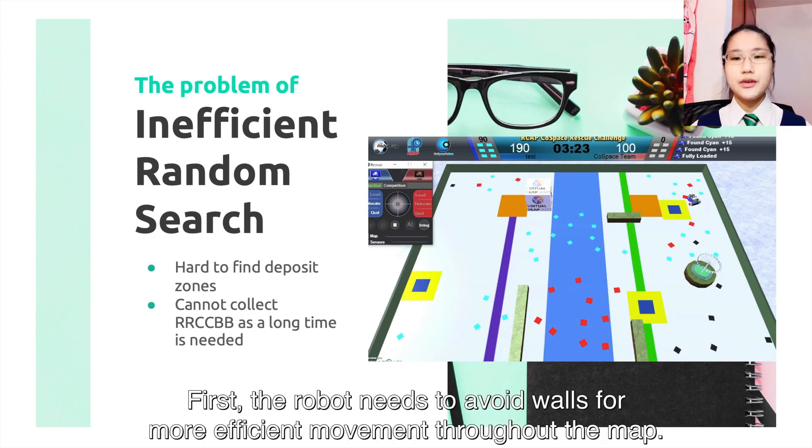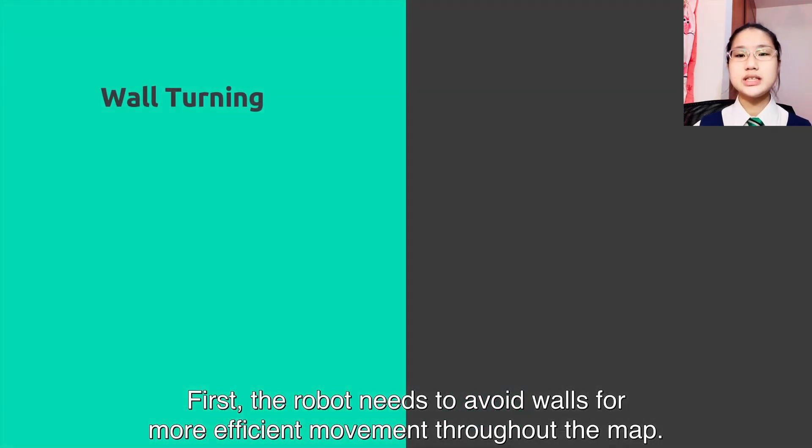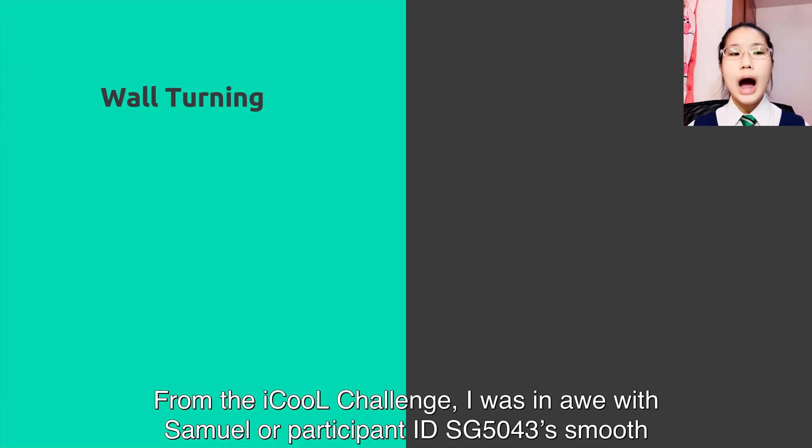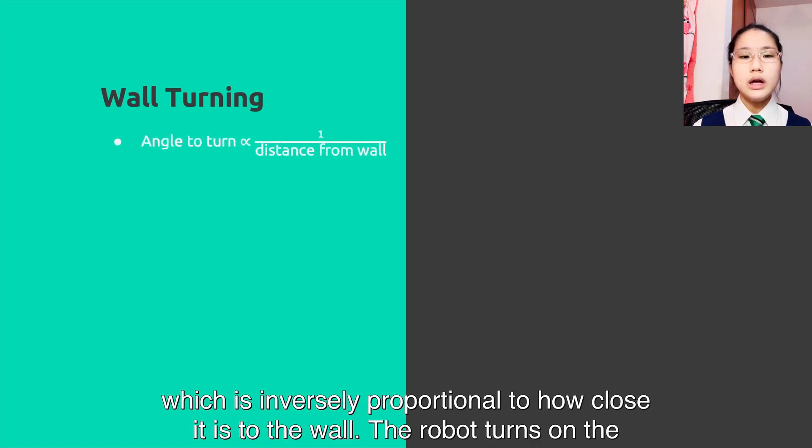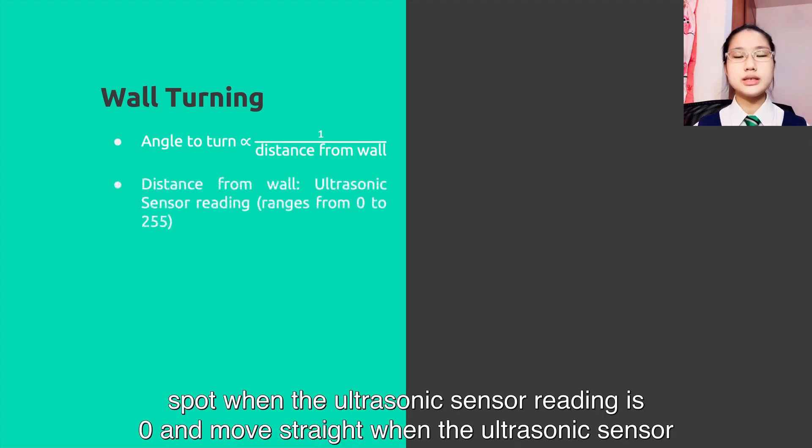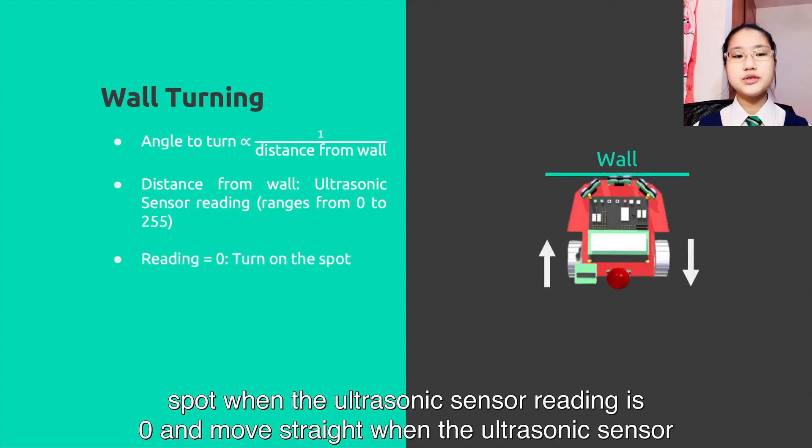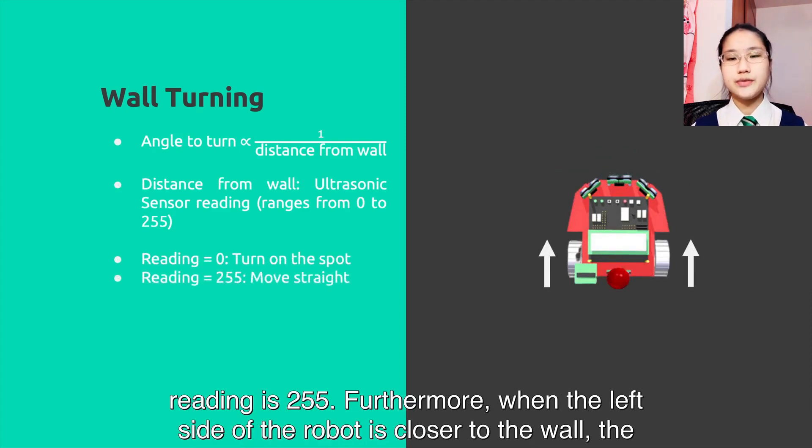First, the robot needs to avoid walls for more efficient movement throughout the map. From the iCOOL challenge, I was in awe with Samuel Al-Pasimid SG5043's smooth wall avoidance. Thus, I programmed the robot to turn at a certain rate to avoid the wall, which is inversely proportional to how close it is to the wall. The robot turns on the spot when the ultrasonic sensor reading is zero and moves straight when the ultrasonic sensor reading is 255.